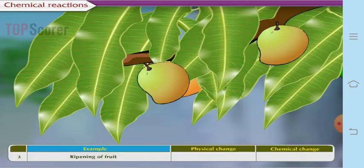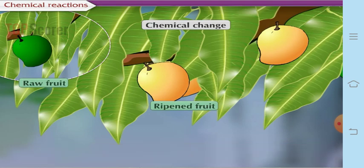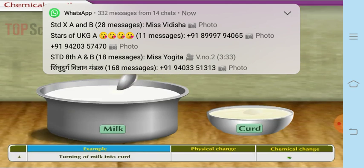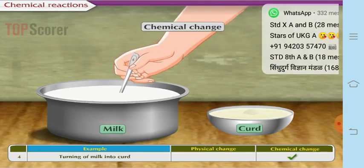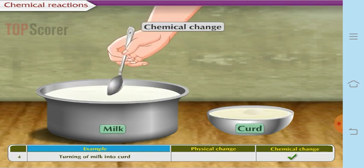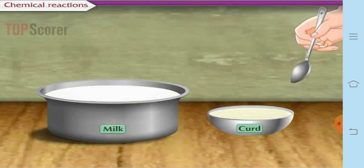Ripening of fruit is a chemical change because the ripened fruit cannot be brought back to raw fruit, and the chemical properties of ripened fruit differ from those of raw fruit. Similarly, milk changing into curd is a chemical change because the properties of milk are different from those of curd.